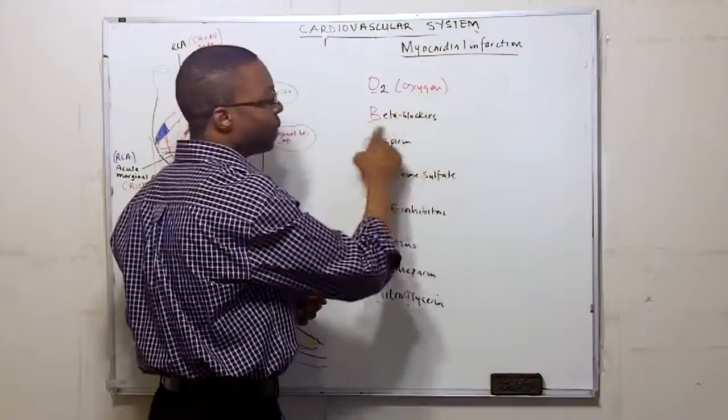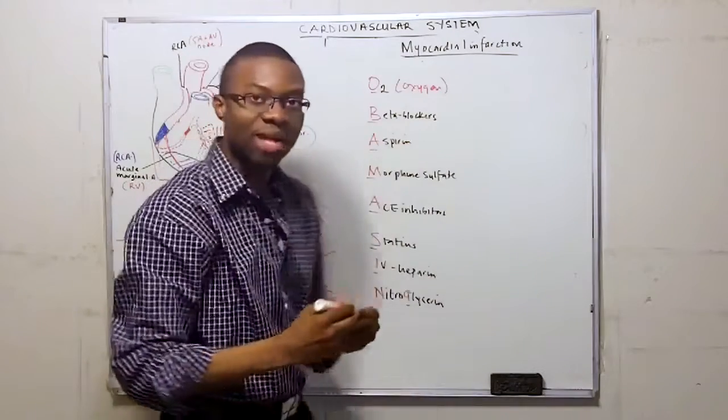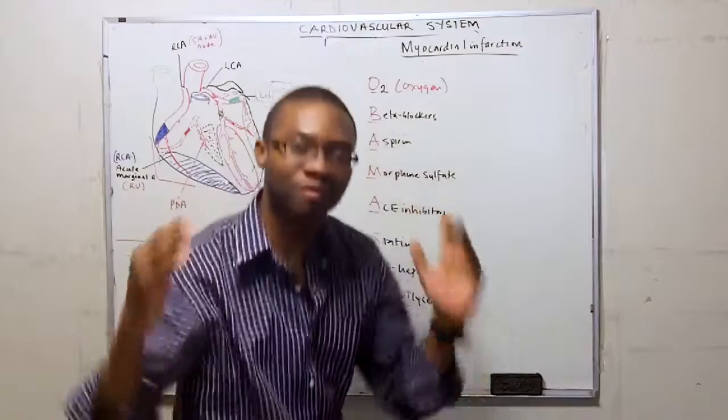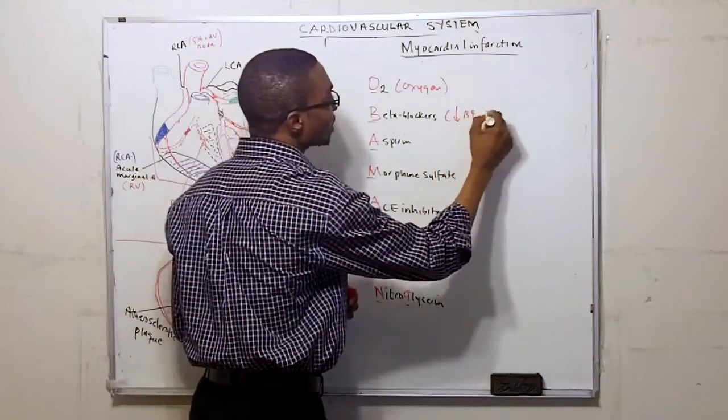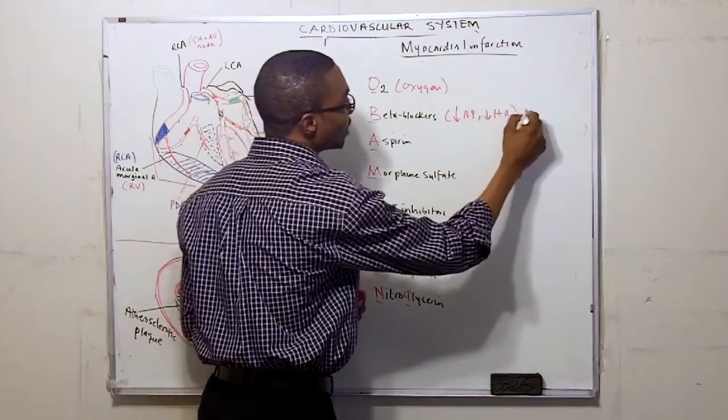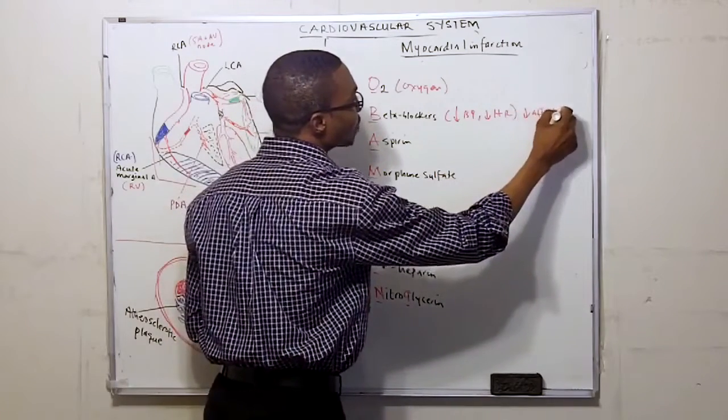The first thing we're going to give them is beta blockers. Remember, beta blockers decrease mortality, very important. Beta blockers are going to decrease their blood pressure, decrease their heart rate, and decrease their afterload.